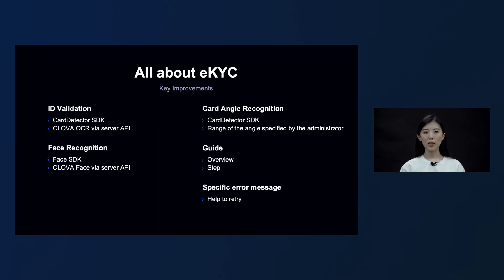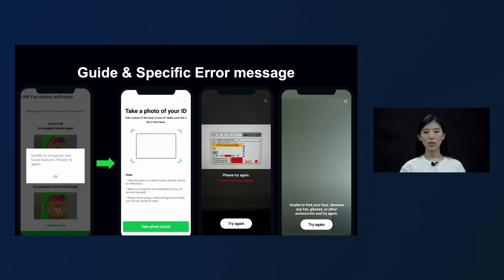Lastly, we specified the guideline and error messages. By displaying guideline pages before and after an applicant has to do a mission, we enabled applicants to do a self-check of the accuracy of their action. When an error occurs, by immediately displaying a detailed error message, we helped applicants to fix the error right away and retry a mission to complete the process.